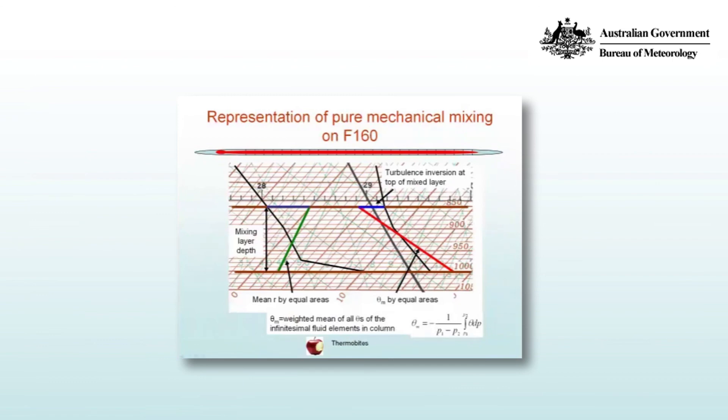Here's what this looks like on a skew-T log-P aerological diagram. The brown lines indicate the mixing layer depth, and so because parcels of air are conserving the value of potential temperature and we're going to establish a mean potential temperature at each level, we use the equal areas method. In this case we choose the value of potential temperature that has equal areas to the left and to the right of the temperature profile.